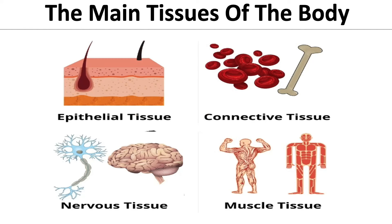We also have the four main tissues of the body: epithelial tissue, connective tissue, nervous tissue, and muscle tissue. Know those four.